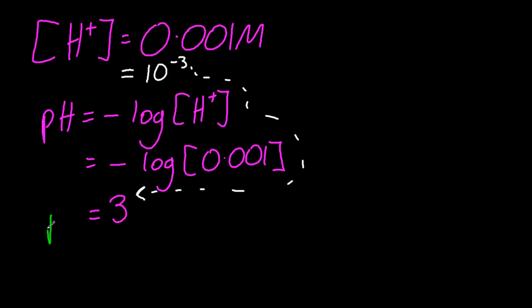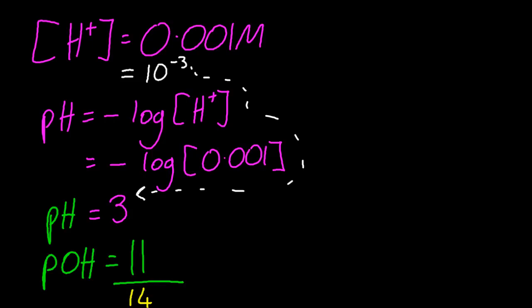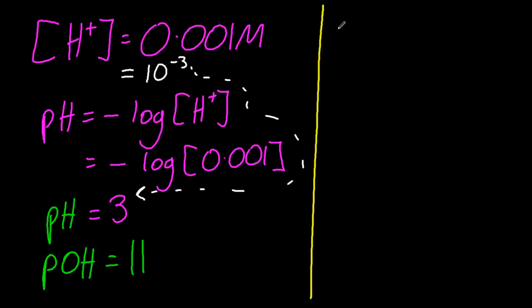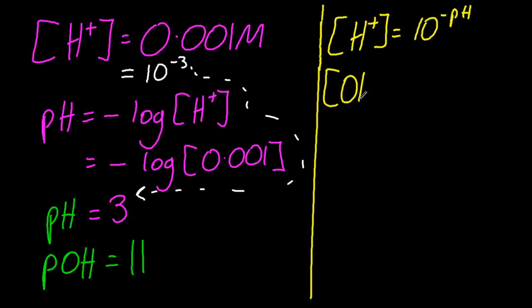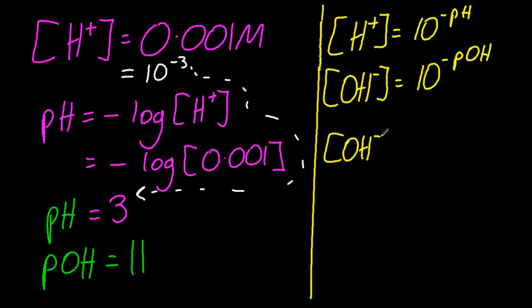pH and pOH together equal 14 — that's really lucky. Thank you, nature. So if pH is 3, pOH must be 11. And by analogy, since H⁺ concentration is 10 to the minus pH, OH⁻ concentration must be 10 to the minus pOH. So that gives 10 to the minus 11 molar for the hydroxide ion concentration. Not much at all.